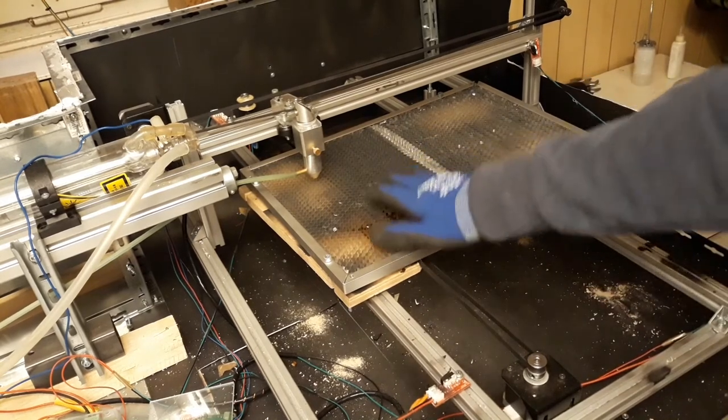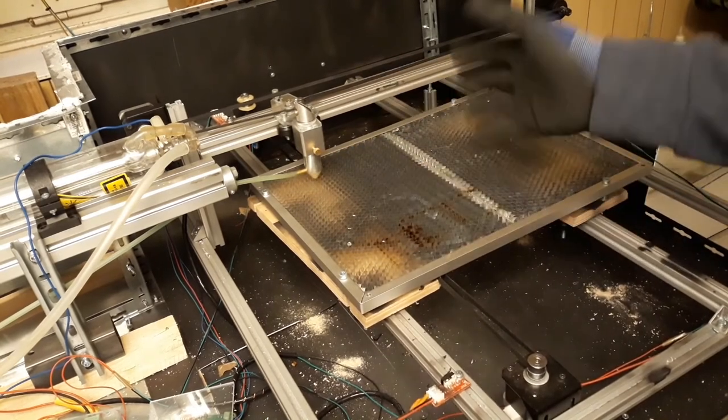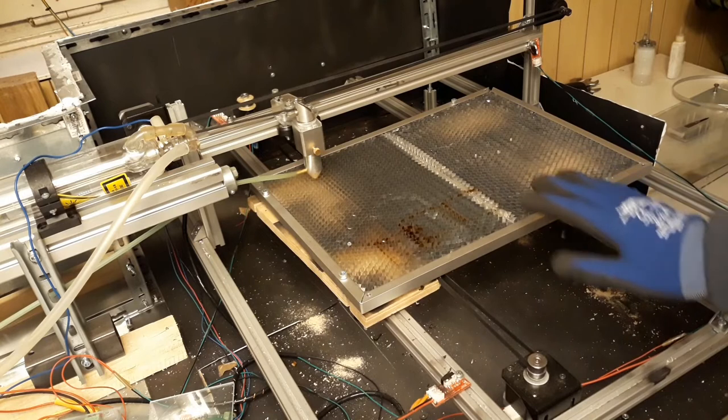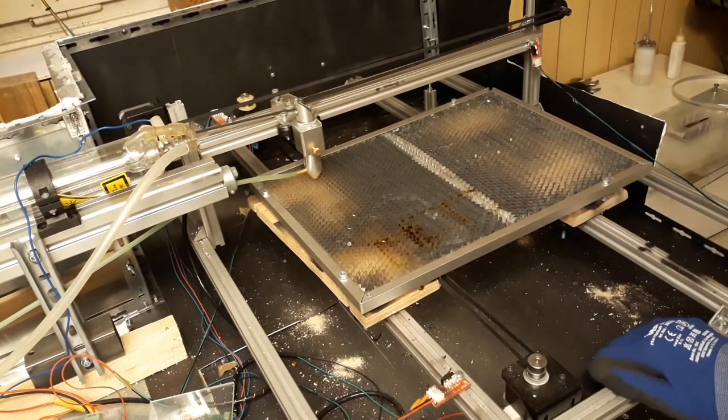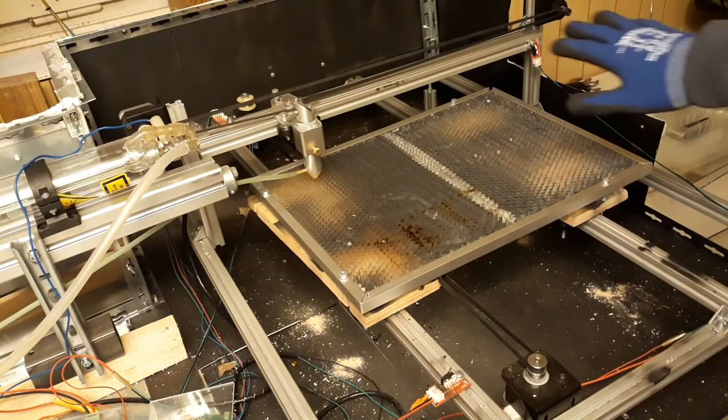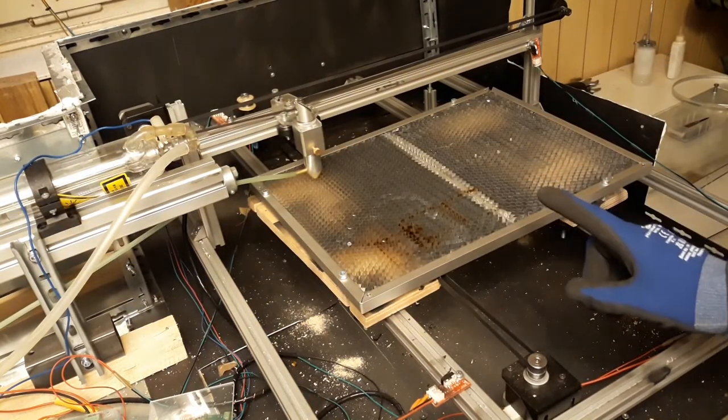As you can see, this is basically the effective cutting area. It's about an A3 sheet. So about 40 x 30 cm. And for this huge machine, that's really not a lot. So we will improve that on the next version.